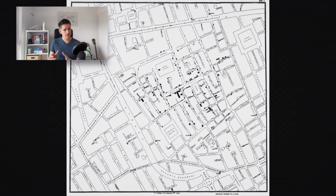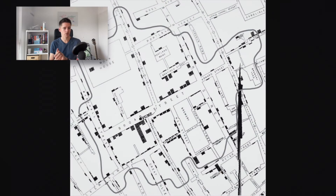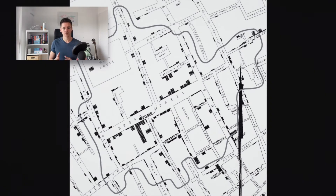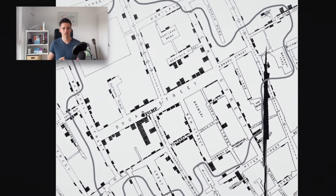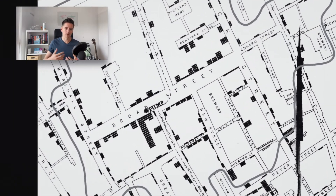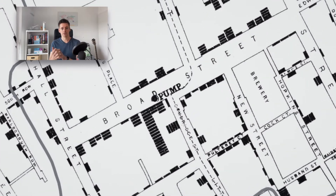In the John Snow cholera map, the seeds are the water pumps, and since people get their water from the closest pump, you can divide the map into Voronoi cell regions. By correlating the number of deaths in each region to the location of a specific pump, John Snow was able to identify the pump that was causing the issue and confirm his theory that the disease was spreading through contaminated water.